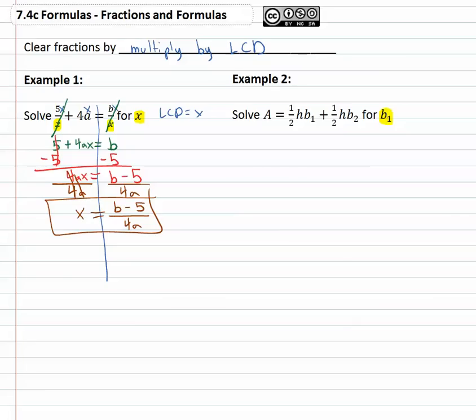Often with formulas we have subscripts, and that just tells us that there are two different b's in this equation. We're solving for b1, we want b2 on the other side.